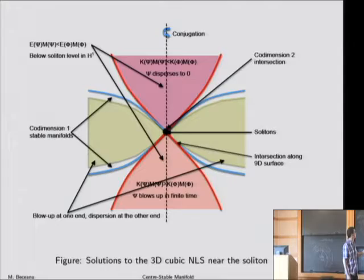If one replaces the variable t by minus t, and one takes the conjugate of the solution, then one is still dealing with the solution. So we expect the same thing happening, going forward and backward in time, except for the conjugate of that solution.